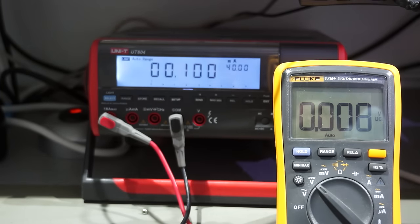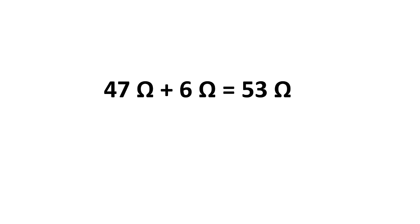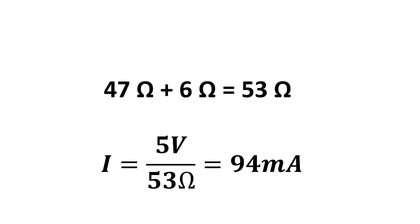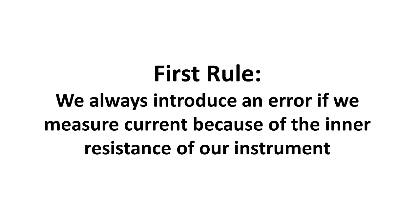So, if we use the milliampere range, we actually have 47 plus 6 equals 53 ohms and the current should be roughly 94 milliampere. In the case of the ampere range, the inner resistance of the multimeter is negligible because the tolerance of the 47 ohm resistor is bigger than the 0.1 ohms. So, we discovered the first rule. We always introduce an error if we measure current because of the inner resistance of our instrument. This has nothing to do with the precision of the instrument itself. So, we best use the highest possible range of our multimeter.